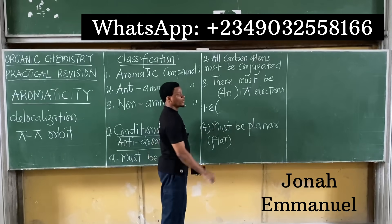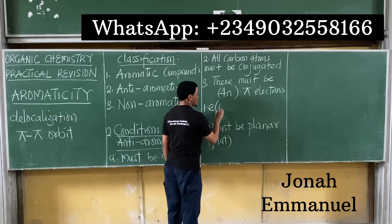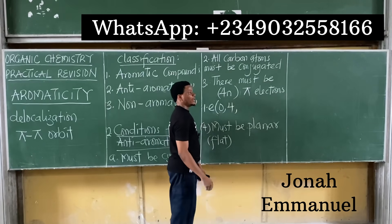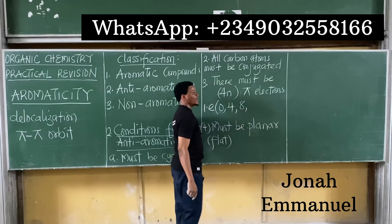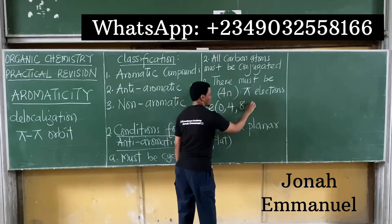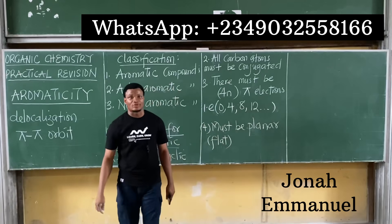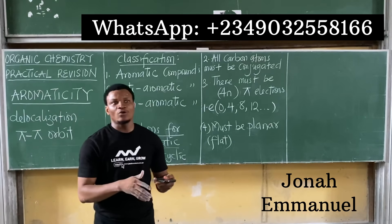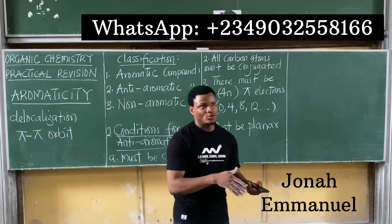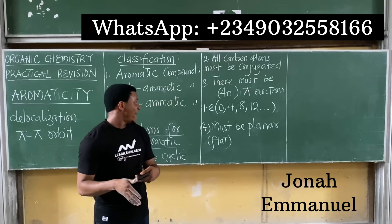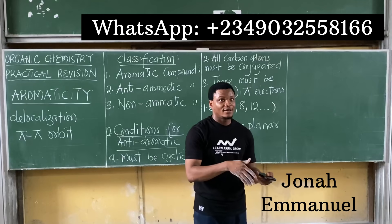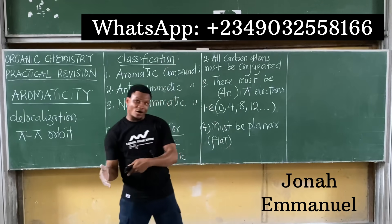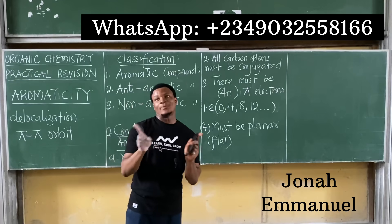Let's calculate 4n values: n = 0 gives 0, n = 1 gives 4, n = 2 gives 8, n = 3 gives 12. So: 0 pi electrons — anti-aromatic; 2 — aromatic; 4 — anti-aromatic; 6 — aromatic; 8 — anti-aromatic; 10 — aromatic; 12 — anti-aromatic. You're essentially alternating between anti-aromatic and aromatic through even numbers.